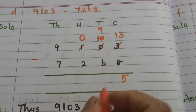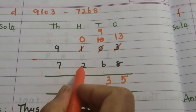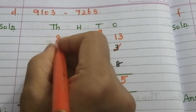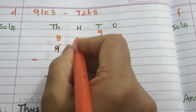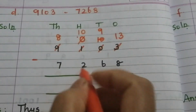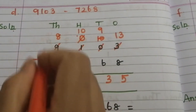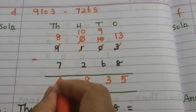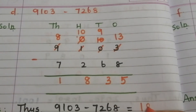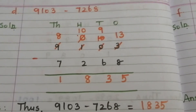9 minus 6 is 3. We can't subtract 2 from 0, so borrow from 9 — 9 becomes 8 and this 0 becomes 10. 10 minus 2 is 8, and 8 minus 7 is 1. So the answer is 1835.